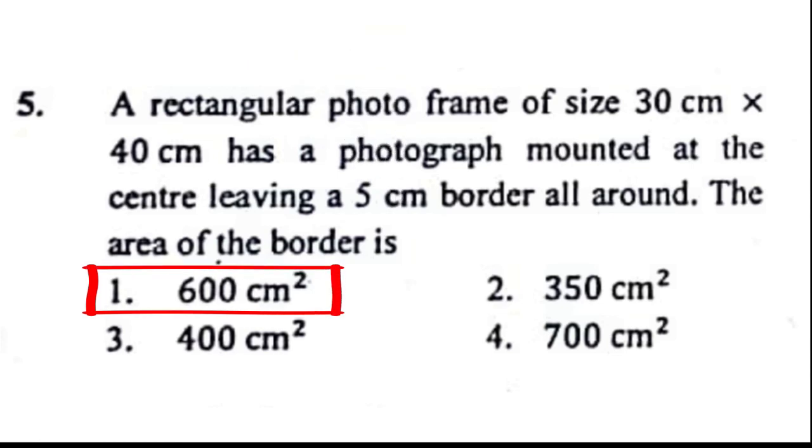Problem number 5: A rectangular photo frame of size 30 cm by 40 cm has a photograph mounted at the center, leaving a 5 cm border all around. The area of the border is? The correct answer to this problem is option 1, that is 600 cm squared.